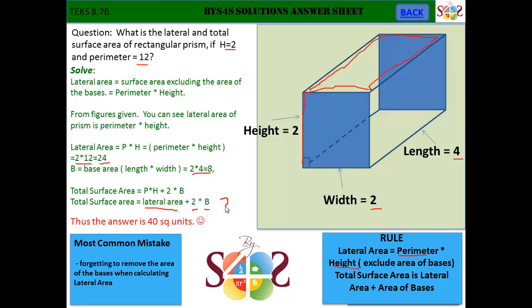Which basically means it's 24 plus 2 times 8 is 16, which is 40 square units.